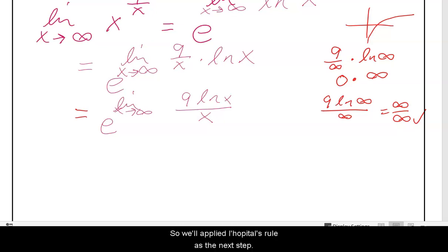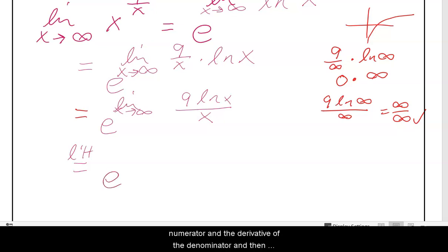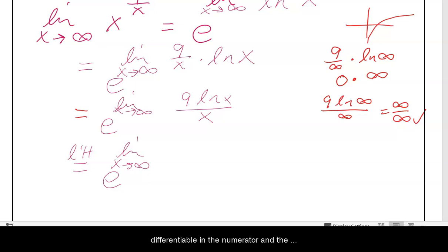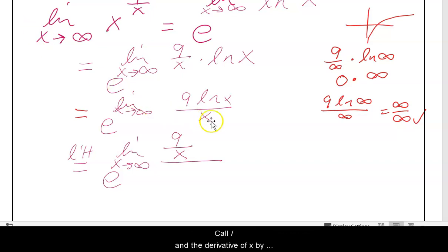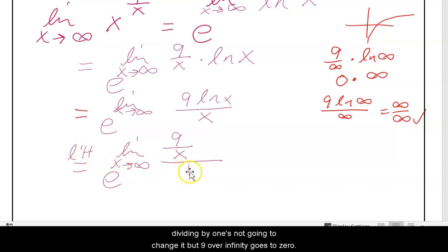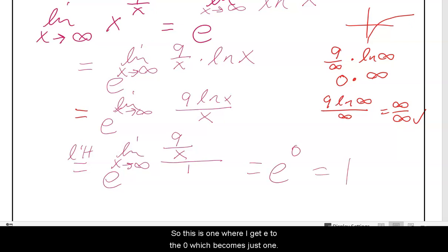Once we have that, we know we can apply L'Hôpital's rule. L'Hôpital's rule involves taking the derivative of the numerator and the derivative of the denominator and comparing the ratios — this works because as long as it's differentiable, the functions look like lines if you get really close. The derivative of 9 natural log of x is 9 divided by x, all divided by the derivative of x by itself which is just 1. Plugging in infinity: dividing by 1 doesn't change it, but 9 over infinity goes to 0. So this gives e to the 0, which becomes just 1.